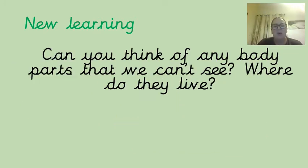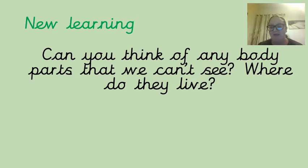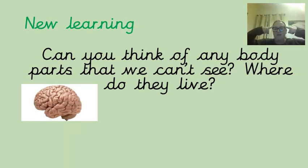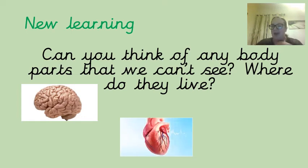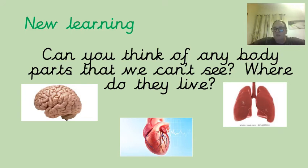Can you think of any body parts that we can't see? And where do they live in your body? If your body was the place, where would they live? You may have thought of... that's the brain. Point to where it lives — it lives in our skull, in our head. What else do you think we can't see? That's our heart. Point to where your heart lives — it lives in your chest. And your lungs — they live just a little bit further down than your heart, and they help you to breathe.